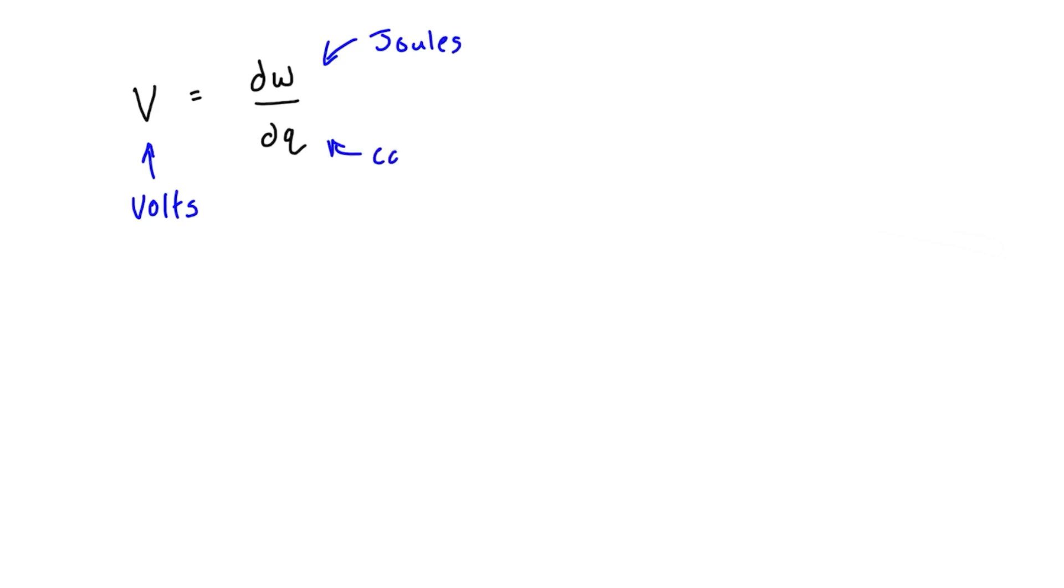And q is charge in coulombs. So ultimately, voltage is an expression of potential energy per unit charge. In a circuit, it's always measured between two points.